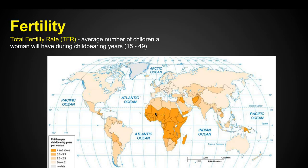Fertility — the ability to have kids. The total fertility rate is the average number of children a woman will have during her childbearing years, which is typically from age 15 to 49, though that does fluctuate. Looking at the fertility rate in the United States, it's going to be maybe two — we're going to have about two kids.